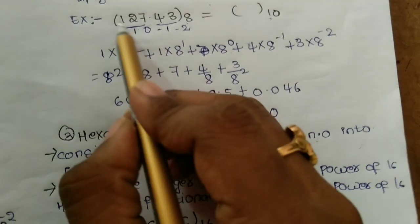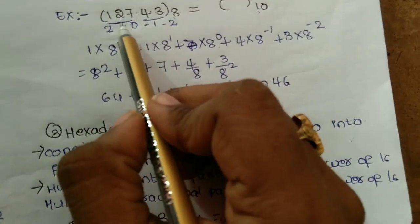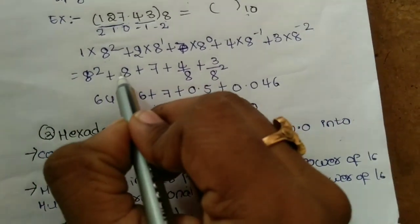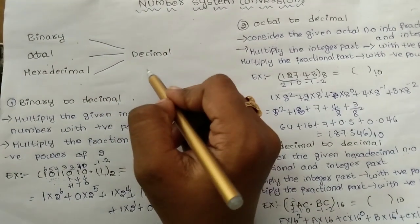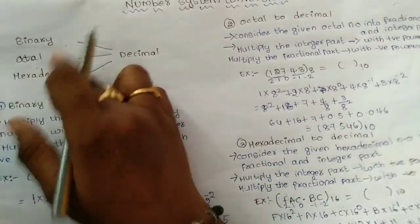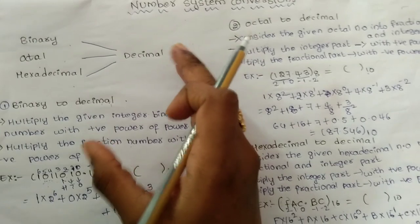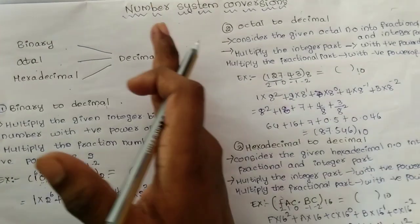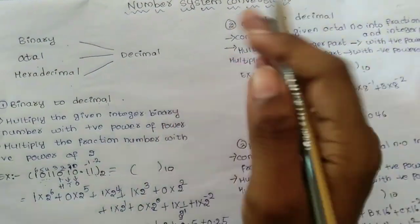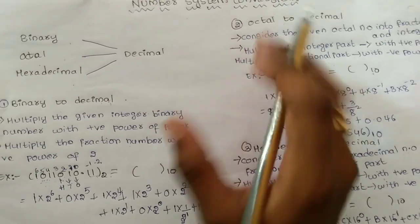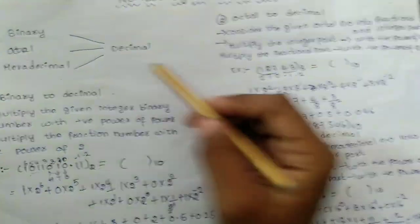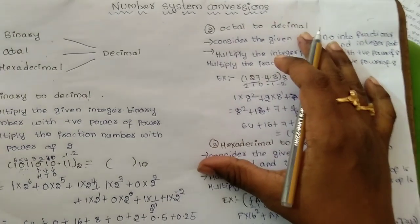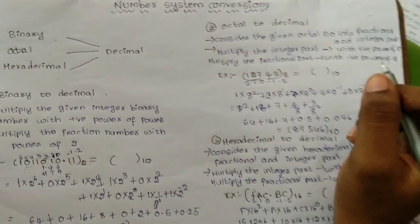Here we have a small mistake: it should be 1 × 8² + 2 × 8¹ in the octal example, and for hexadecimal the base is 16. For all number system conversions — binary, octal, hexadecimal to decimal — the overall process is the same. In the next video I will cover more conversions. Bye, bye-bye!